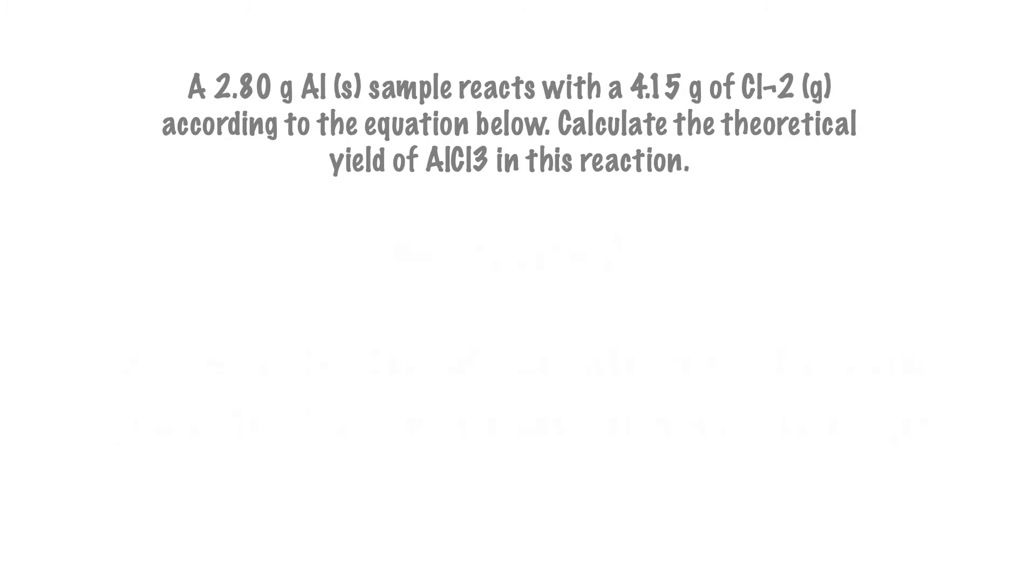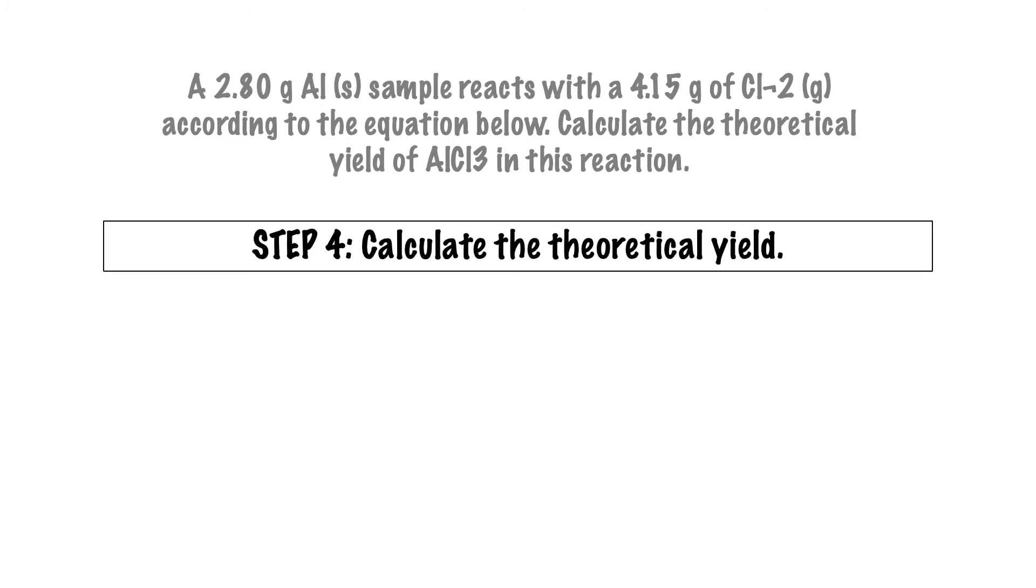Our final step is to determine the theoretical yield of aluminum chloride in the reaction. Remember that the theoretical yield is the amount of product that is produced when the limiting reagent is fully consumed.